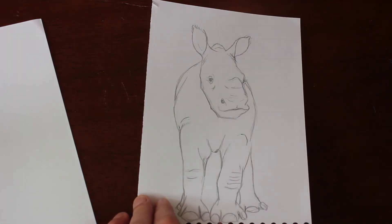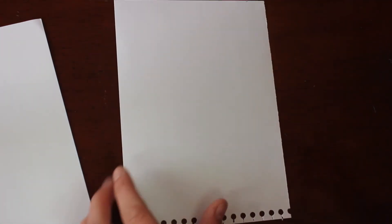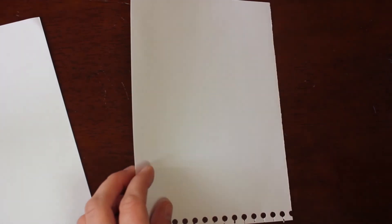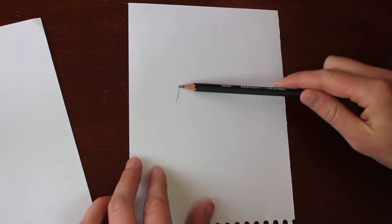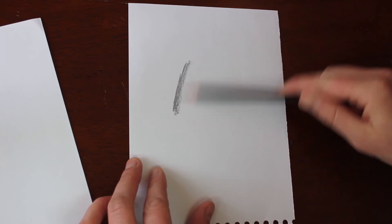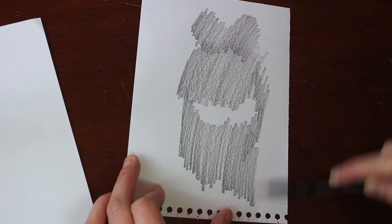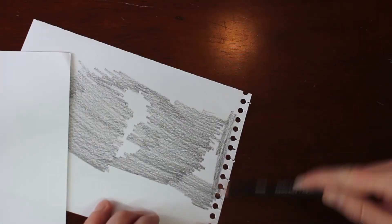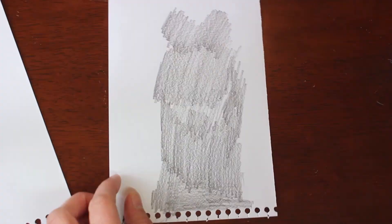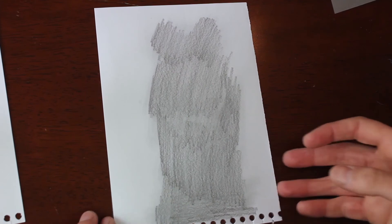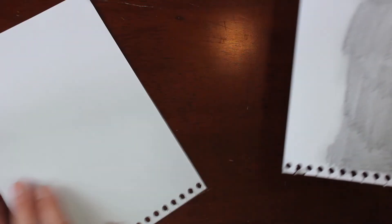Method number four is one of the simplest methods though not always quite as effective. Basically all we are going to do is take the original sketch flip it upside down and just scribble on the back. Now for this you can use charcoal pencil, graphite pencil, even chalk if you want a white transfer. Just color over where all your lines are on the other side where your sketch is.